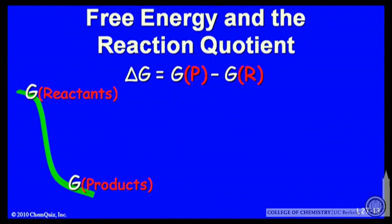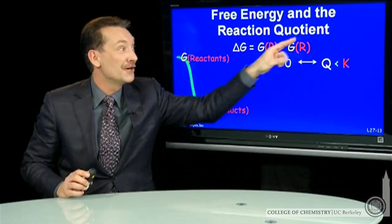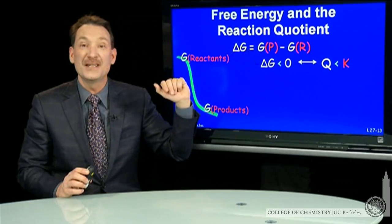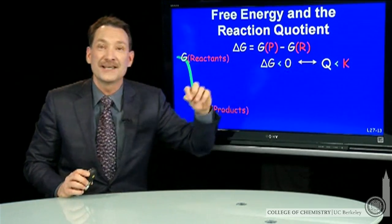So let's look at that for a couple different cases. When delta G for a chemical reaction is less than zero, that means the products are lower in free energy than the reactants. Remember, it's products minus reactants. So if you have a higher reactant free energy than the products, then delta G will be negative. That's the same case for Q less than K.